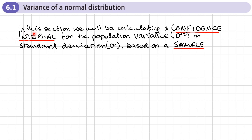What we're going to be doing in this section is calculating a confidence interval for the population variance or the population standard deviation based on a sample.